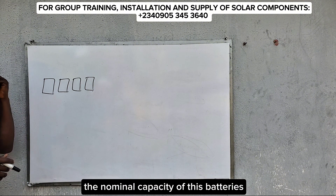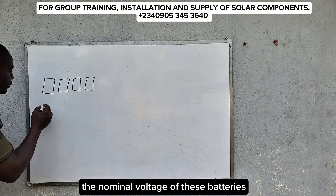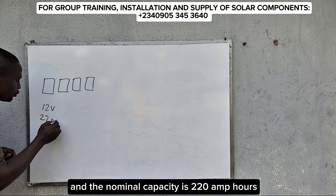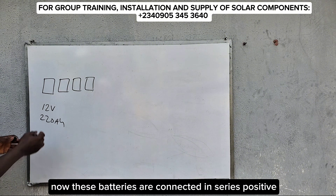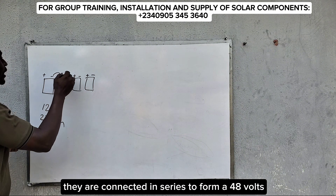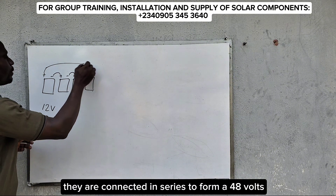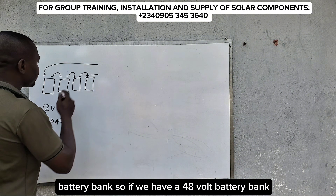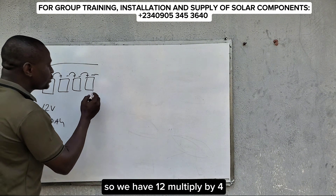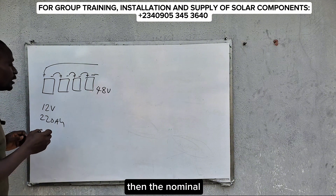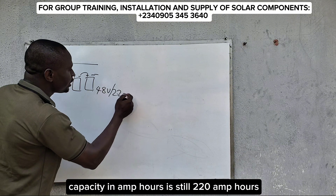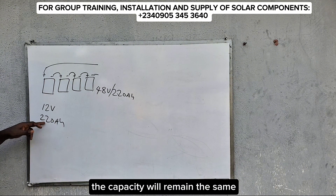We are looking at the nominal capacity and nominal voltage of these batteries. Each of them is 12 volts and the nominal capacity is 220 amp hours. These batteries are connected in series — positive, negative, positive, negative — to form a 48 volt battery bank. So we have 12 multiplied by 4, which gives us 48 volts. The nominal capacity in amp hours is still 220 amp hours, because when you connect in series, capacity remains the same but voltage doubles.